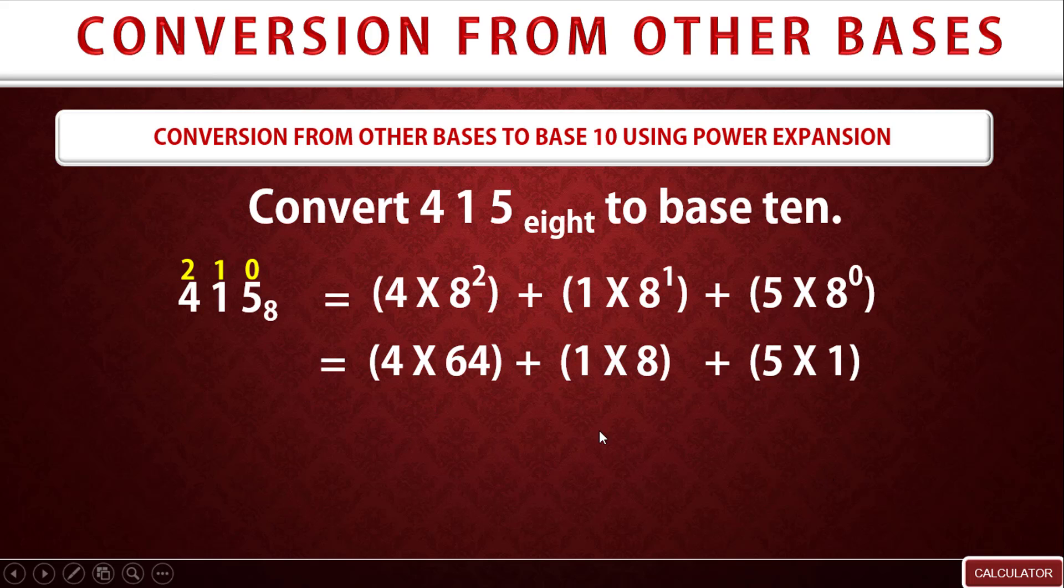Okay, so you can see that now. Then the next thing is for us to multiply 4 × 64. You can use your calculator to do that, so that will give us 256. Then 1 × 8 will give us 8, and 5 × 1 will give us 5. So that's the reason why we have 256 here for 4 × 64.